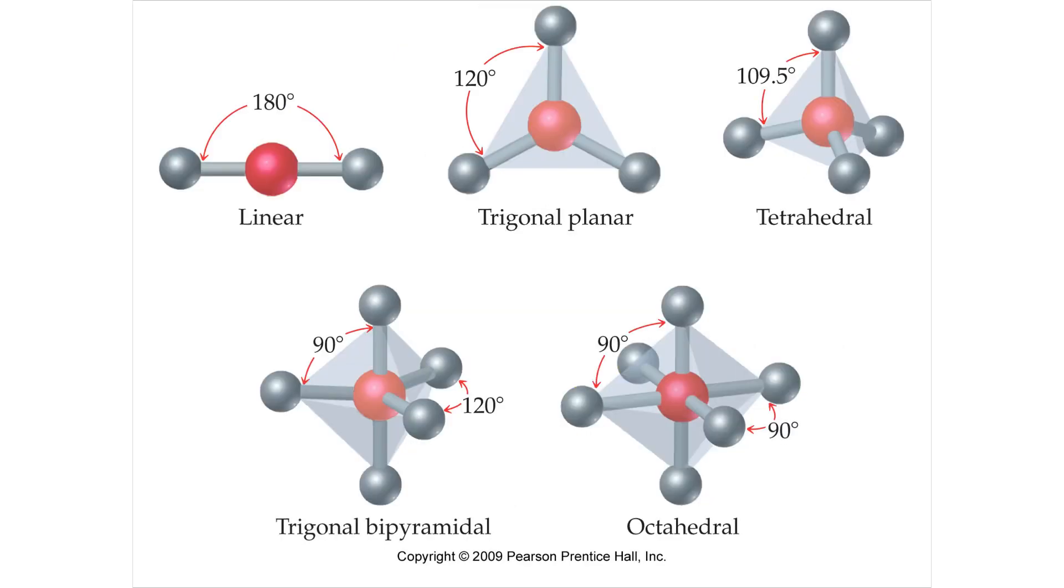These are the five basic shapes that you're going to see, not different numbers of things attached to the central atom, but if you have one central atom and some things attached to it, you could either have a linear, which is a straight line where things are all lined up.